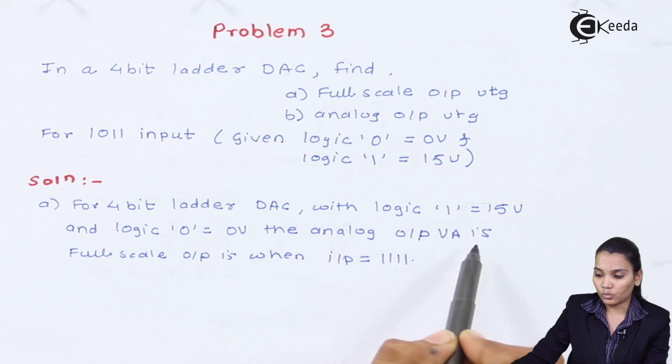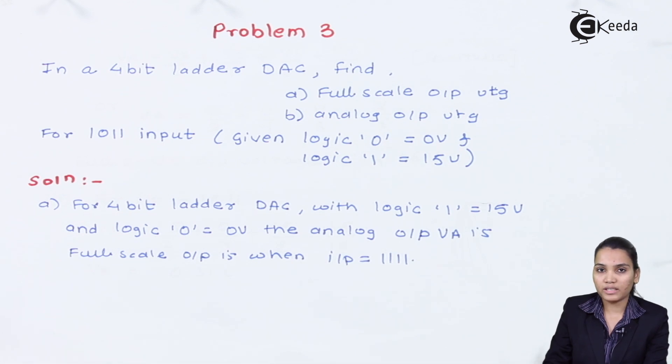That means the analog output VA is a full scale output when input will be 1111. The very first step while calculating the full scale output voltage is to always consider the output voltage as full scale whenever the input will be the highest bits. That is, all the inputs should be higher bits.